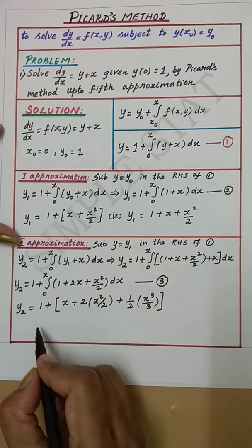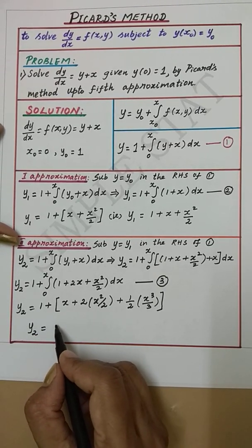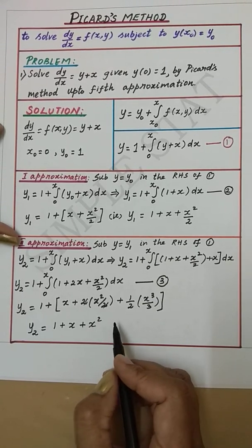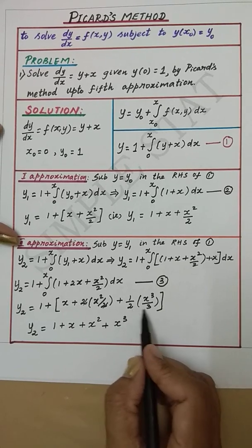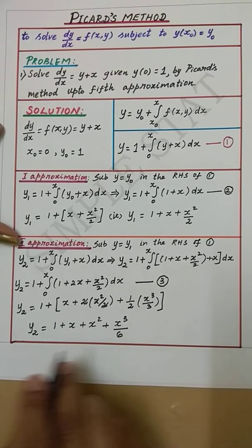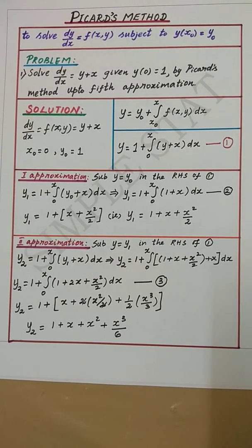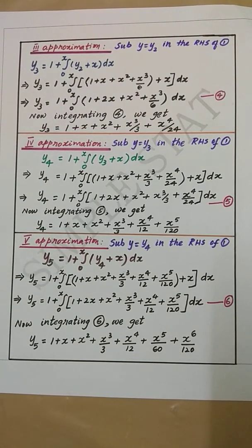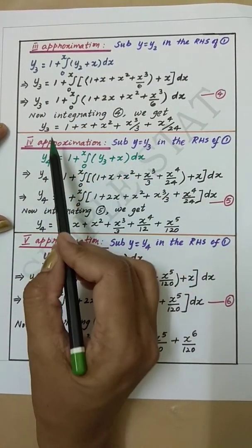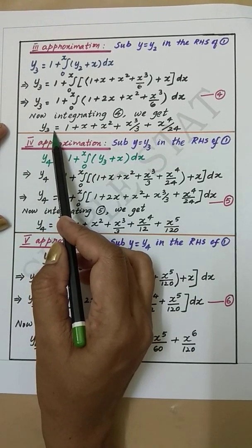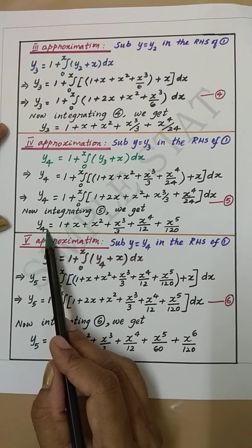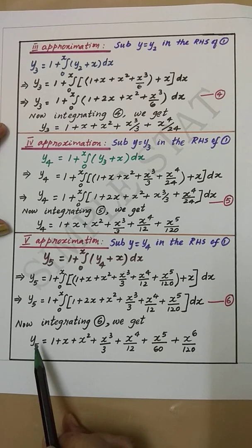Simplifying, we get y₂ equal to 1 plus x plus x² plus x³/6. Now repeating this process, we can find the third approximation to get y₃, the fourth approximation to get y₄, and the fifth approximation will give y₅.